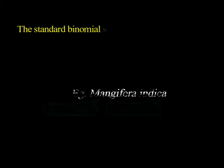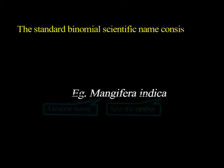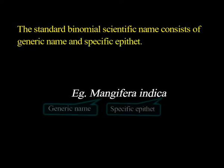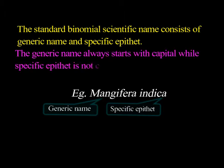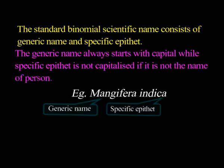The standard binomial scientific name consists of a generic name and a specific epithet. The generic name always starts with a capital letter, while the specific epithet is not capitalized unless it is the name of a person.